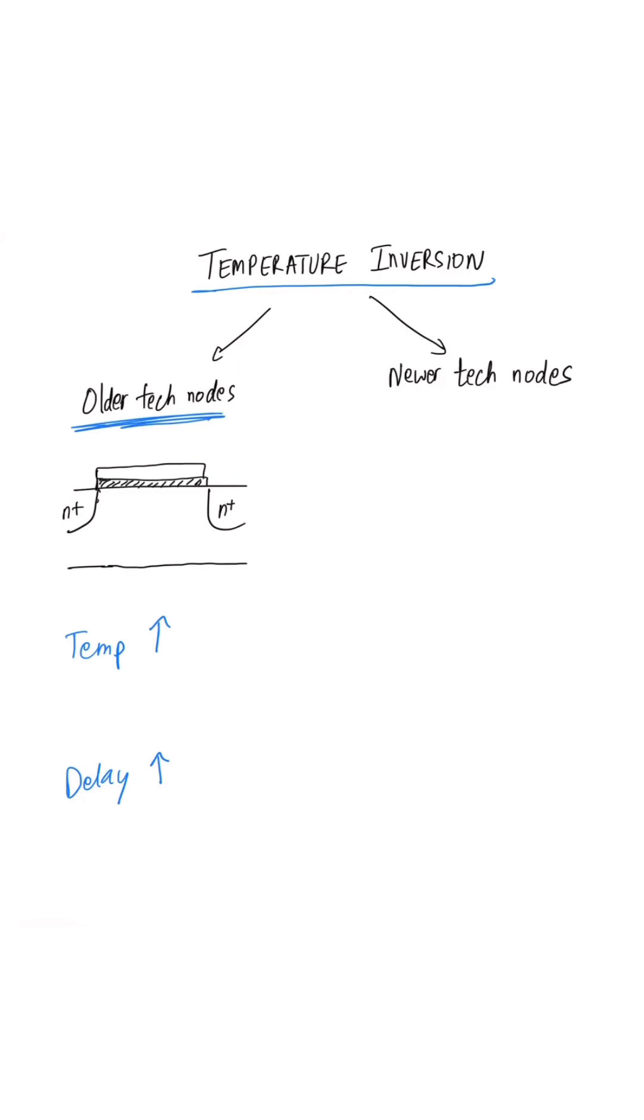This was because at higher temperatures, the kinetic energy of the charge carriers was high, which resulted in more collisions between the charge carriers, which resulted in a decrease in the mobility of the carriers, which in turn caused the increase in the cell delays.